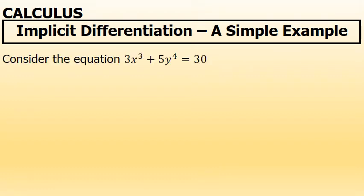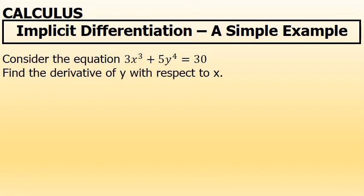Considering the equation 3x to the 3rd plus 5y to the 4th equals 30, if we're asked to find the derivative of y with respect to x, implicit differentiation is required.